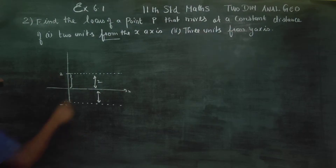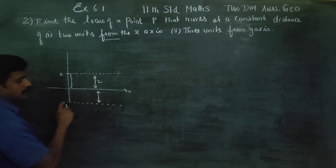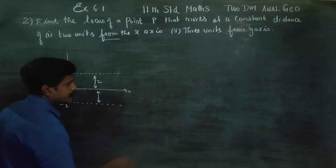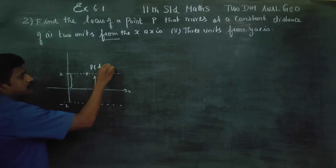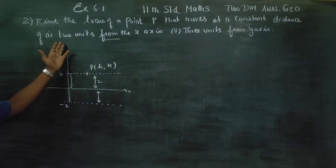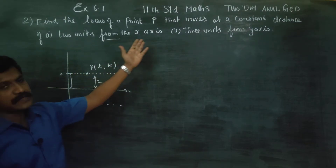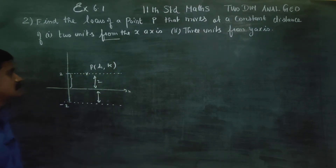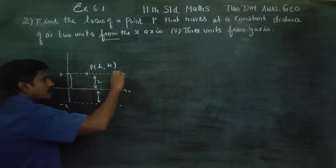Apoi ni solhi — one point is noted here, and another point is noted here. In the point, let h, k be the moving point at a constant distance of 2 units from the x-axis. The x-coordinate keeps changing.